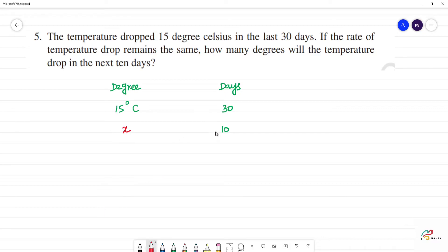So, if we cross-multiply, x into 30 days is equal to 15 degree Celsius into 10 days. So, x equals 15 degree Celsius times 10 divided by 30.